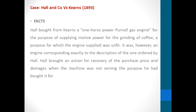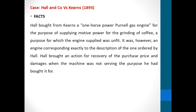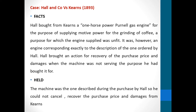We have a case here. Ho bought from Keynes a one-horse power panel gas engine for the purpose of supplying motive power for the grinding of coffee — a purpose for which the engine supplied was unfit. It was, however, an engine corresponding exactly to the description of the one ordered by Ho. After realizing that the machine wasn't working for the purpose he had bought it for, Ho sued. The court said the machine was the one described during the purchase. So Ho could not cancel, recover the purchase price, or claim damages from Keynes.